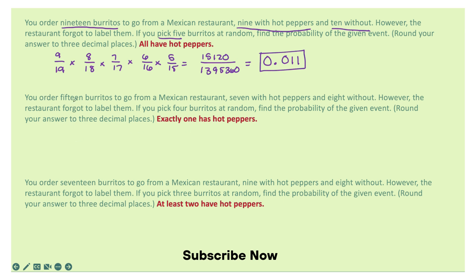For the second one, you're picking 15 burritos to go from a Mexican restaurant, 7 with hot peppers, 8 without. However, the restaurant forgot to label them. You pick 4 burritos at random, find the probability of the given event.